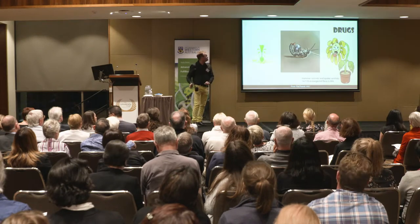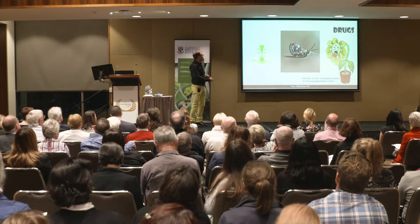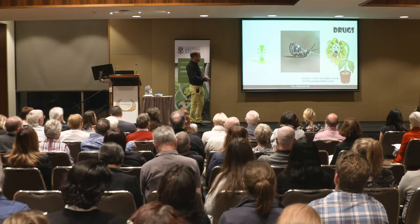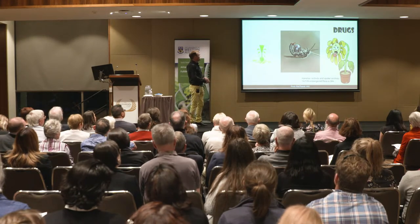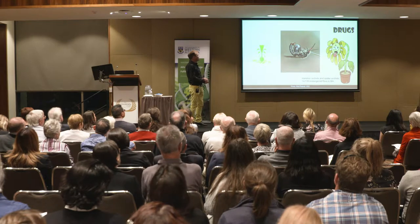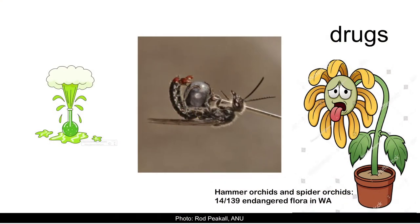We put these compounds on a pin. We can see the male wasp here trying to copulate with the pin — we can see the genitalia out here. That's actually how we confirm that we've found the right compound.